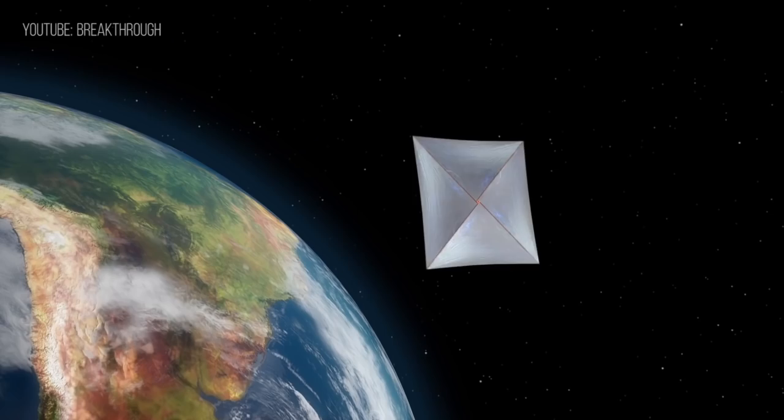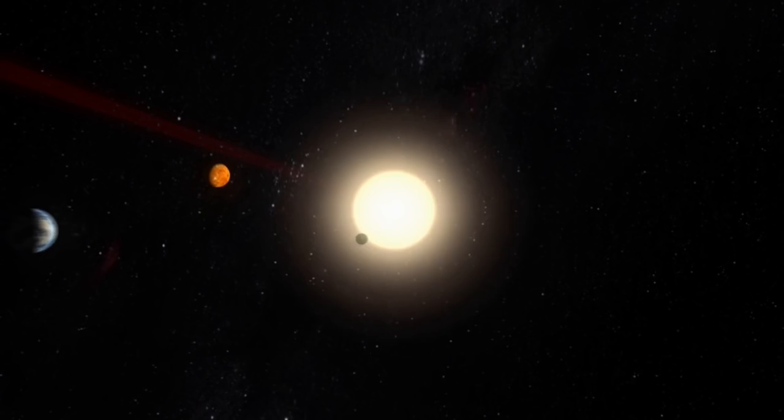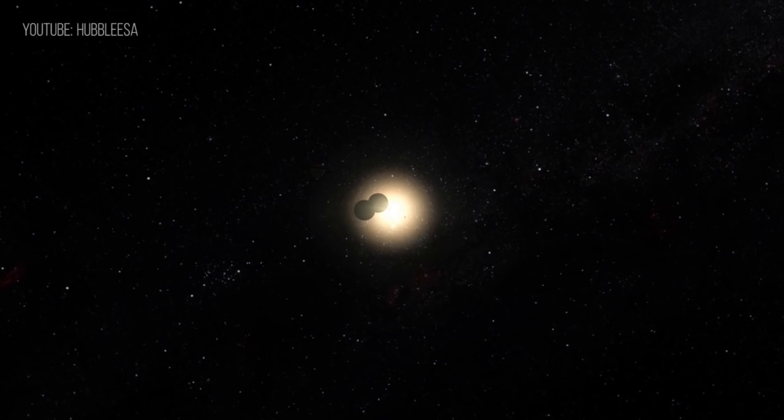At that point, it will take the craft just 3.5 days to reach the edge of the solar system. Five months later, it will reach the treacherous Oort cloud, trillions of icy objects surrounding the solar system that will take 7.5 years to pass through.